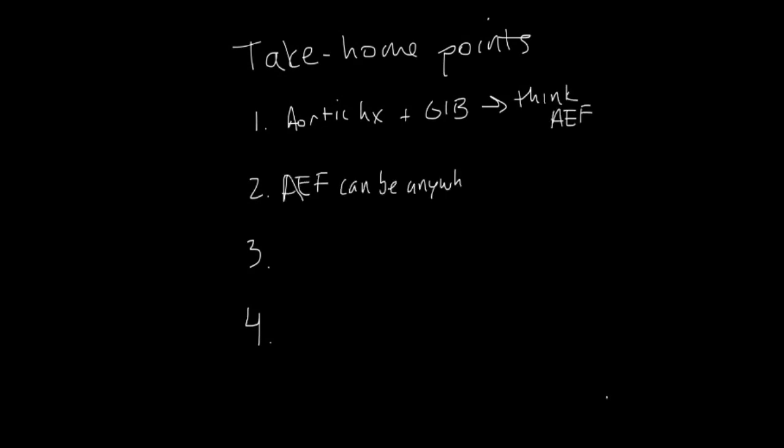So to sum it up with some take-home points, number one, again, any aortic history, any GI bleed, you have to be thinking about aortoenteric fistula, which can occur at any point in the GI tract, most commonly in the duodenum, and in any amount, as even smaller bleeds from aortoenteric fistulas can herald much larger bleeds to come. Stability guides disposition. Please involve your surgery friends early.